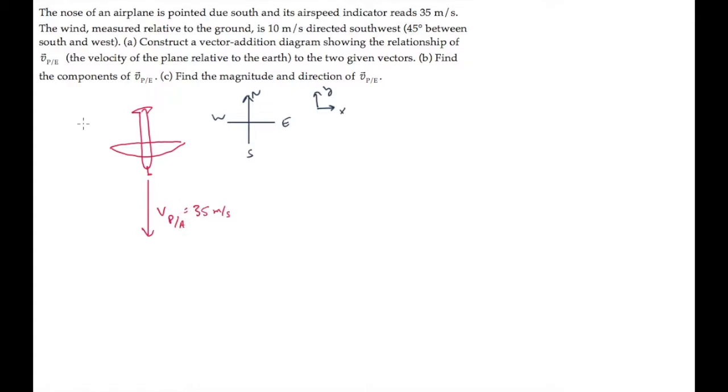The wind, we're told, measured relative to the ground, is 10 meters per second, directed halfway between south and west. So these blue vectors are the velocity of the air relative to the earth. They have a length of 10 and a direction of 45 degrees from south towards west.